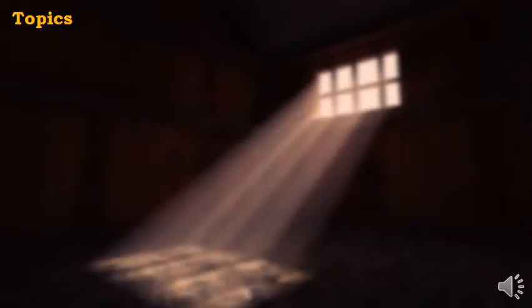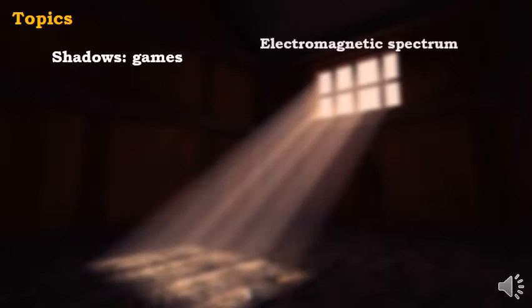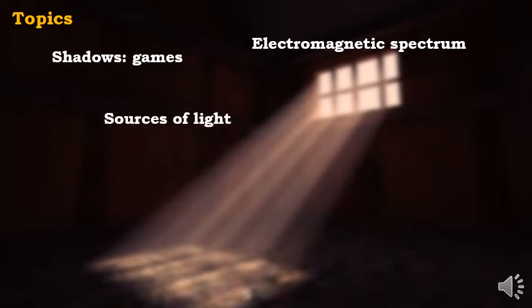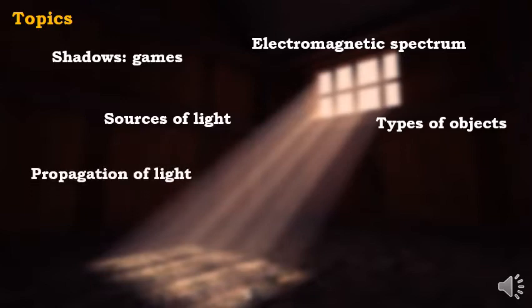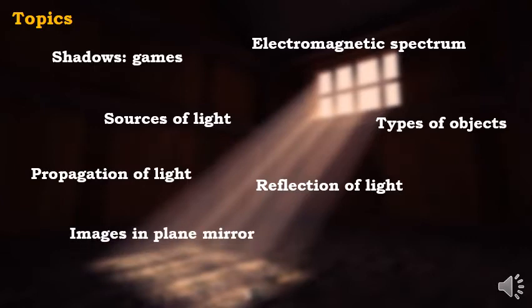The topic is Light and Formation of Shadows. The topics we will be covering are: Shadows, a game, the Electromagnetic Spectrum, Sources of Light, Types of Objects, Propagation of Light, Reflection of Light, Images in a Plain Mirror, Types of Reflection, and a Brain Power activity.